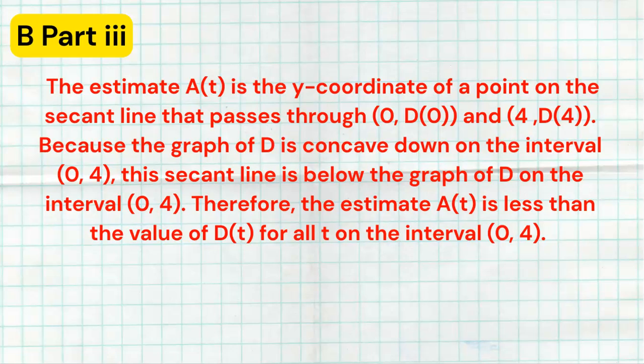Now, the estimate for A_t is the y-coordinate of a point on the secant line that passes through (0,25) and (4,34). Because the graph of D is concave down over the interval zero to four, which we saw in the picture, the secant line is going to be below the graph of D on the interval zero to four. Therefore, any estimate using A_t is going to be less than the value from the model D for all t on that interval zero to four. So that's a really good explanation that's referencing the graph talking about it being concave down. And then I also had those quick pictures there that really kind of hit it home.